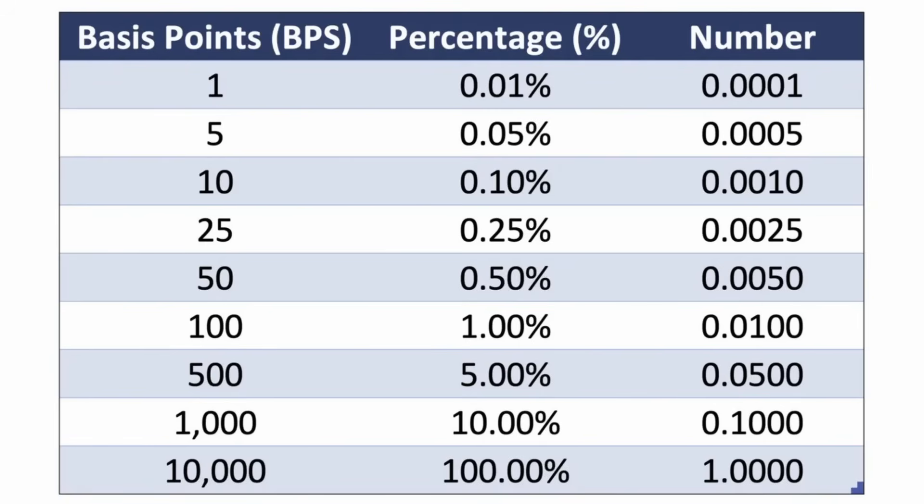One thing that is important to note is that when we talk about interest rates, we talk about them in terms of basis points. You might see this referred to as BPS in writing, or you might even hear someone call it BPS out loud. A basis point is one one-hundredth of a percent, or 0.01 percent. And so 100 basis points is one percent.